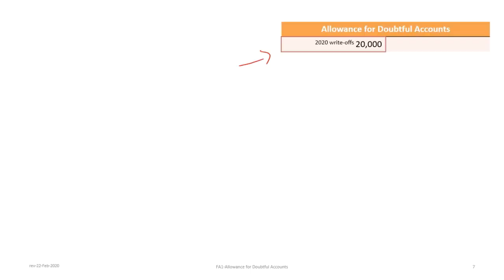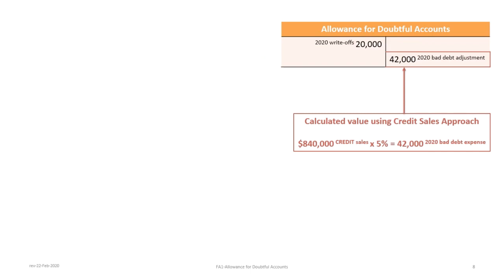The other side of the write-off journal entry is a debit to allowance for doubtful accounts for $20,000. The beginning balance of the AFDA account is zero because the company started operations in 2020. Under the credit sales approach, the bad debt adjustment is calculated by taking credit sales and multiplying by the estimated rate of default. So $840,000 times 5% gives us $42,000 as the bad debt expense adjustment.